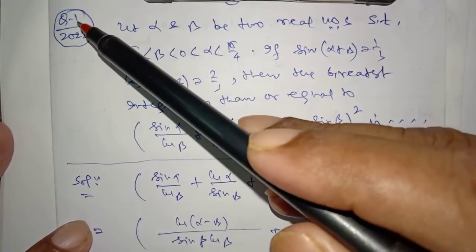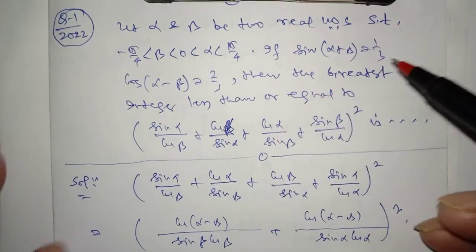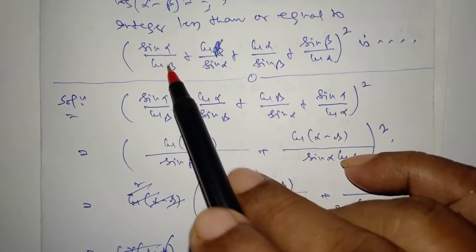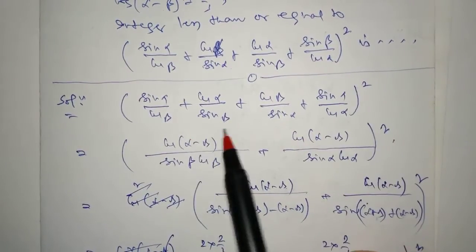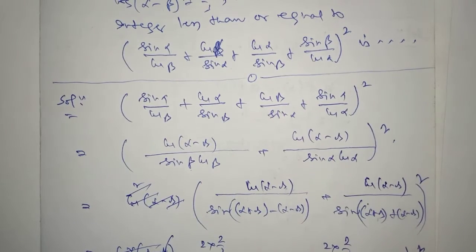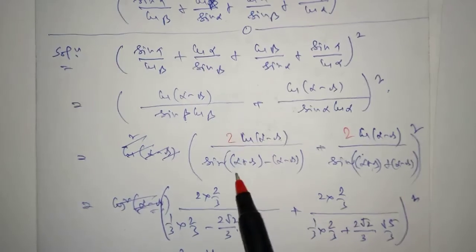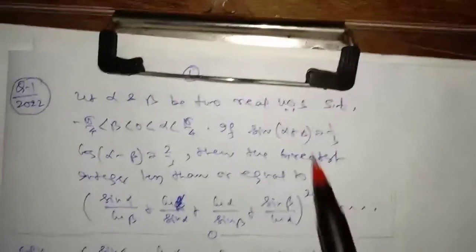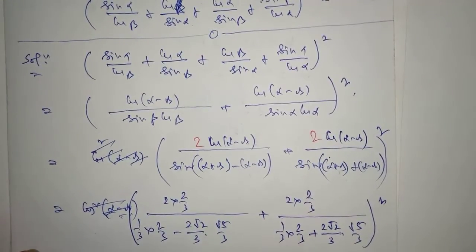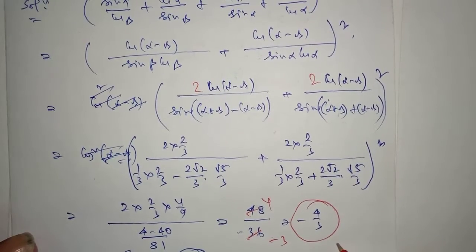JEE Advanced 2022 Paper 2, Question 1: Let α and β be two real numbers such that sin(α+β) = 1/3 and cos(α-β) = 2/3. Find the greatest integer less than or equal to the given expression. Rearranging using sine and cosine identities, expanding sin α cos β terms, and multiplying by 2, we get the value -3, so the greatest integer value is -2.